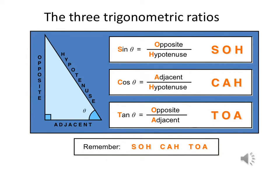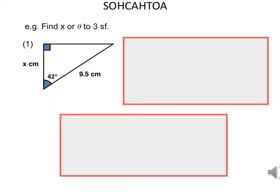We know the ratios: sin of the angle equals the opposite divided by the hypotenuse; cos of the angle is the adjacent divided by the hypotenuse; and tan of the angle is the opposite divided by the adjacent. We can remember these ratios using the mnemonic SOH-CAH-TOA. So we can write down our rules: SOH-CAH-TOA.